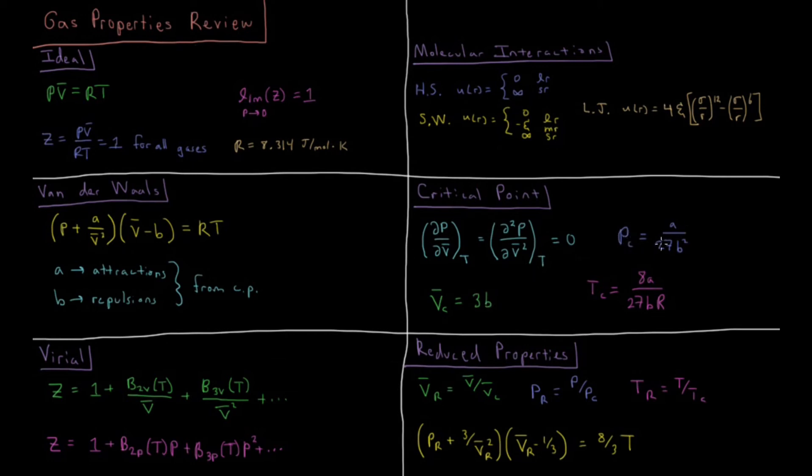you get values for the critical volume which is 3 times b, critical pressure a over 27b squared, and critical temperature 8a over 27br, which are the only 3 exact values where that critical point occurs.